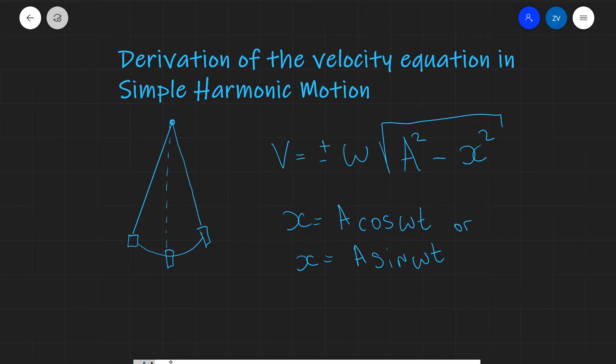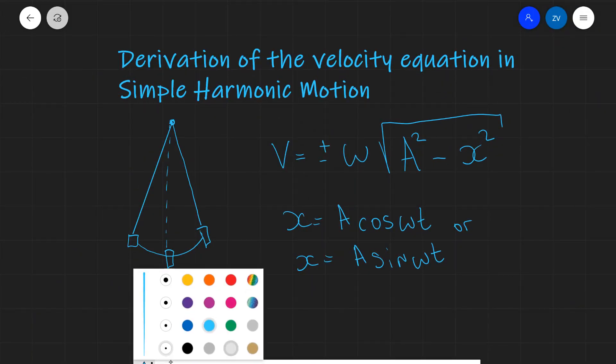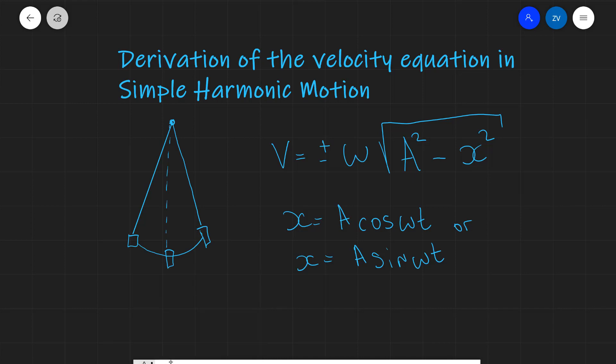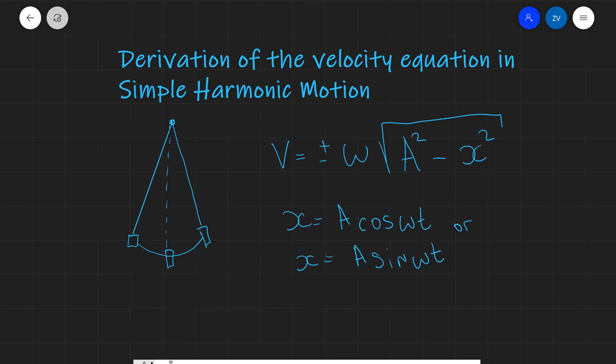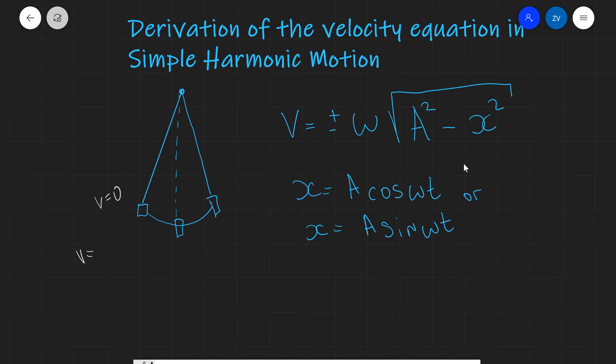Just before we do so, though, just a quick little recap, which is always useful. Remember, in simple harmonic motion, the velocity will always be zero when we are at our maximum displacement or the amplitude. So, in this case, right over here, the velocity will be zero. And this is because A is equal to x. So, in other words, the velocity will be equal to plus or minus the square root of A squared minus A squared, which is, of course, zero. And this is applicable to both this position and this position.